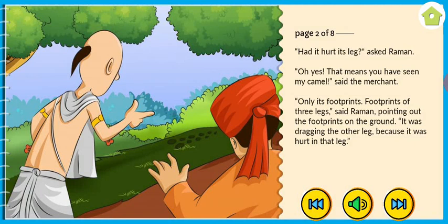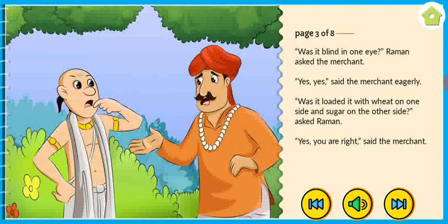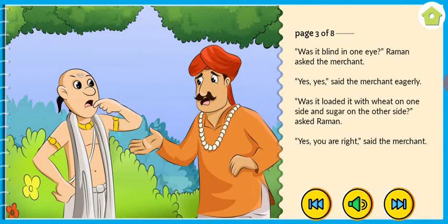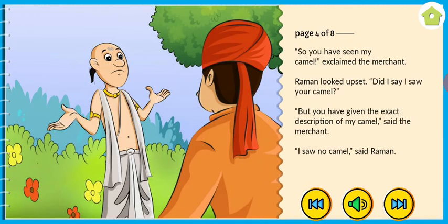'It was dragging the other leg because it was hurt in that leg. Was it blind in one eye?' Raman asked the merchant. 'Yes, yes,' said the merchant eagerly. 'Was it loaded with wheat on one side and sugar on the other side?' asked Raman. 'Yes, you are right,' said the merchant. 'So you have seen my camel?' exclaimed the merchant.